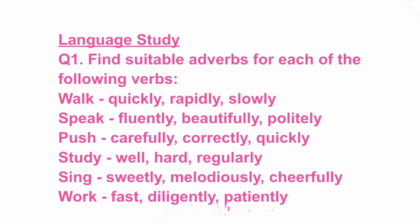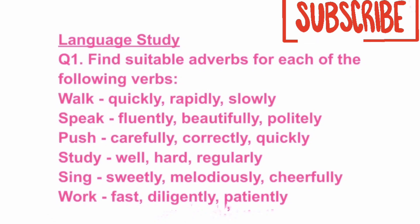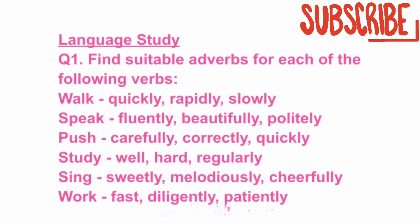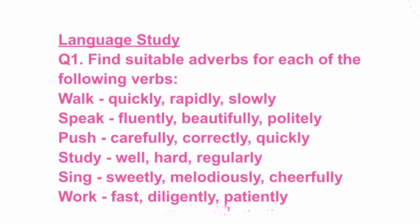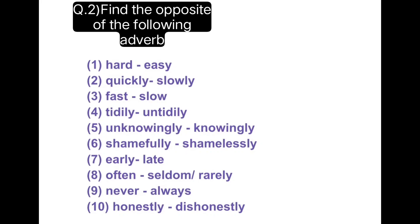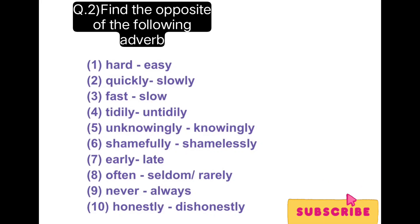Find a suitable adverb for each of the following verbs. For 'walk': quickly, rapidly, slowly. For 'speak': fluently, beautifully, politely. For 'push': carefully, correctly, quickly. For 'study': well, hard, regularly. For 'sing': sweetly, melodiously, cheerfully. For 'work': fast, diligently, patiently. Now find the opposites of the following adverbs: hard/easy, quickly/slowly, fast/slow, tidily/untidily, unknowingly/knowingly, shamefully/shamelessly, early/late, often/seldom, never/always, honestly/dishonestly.